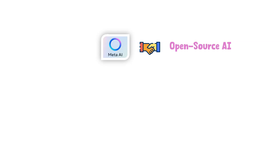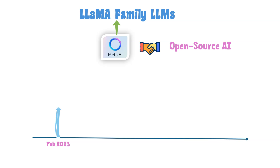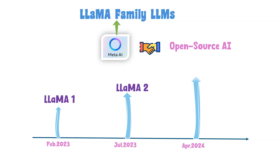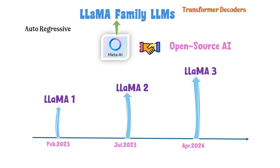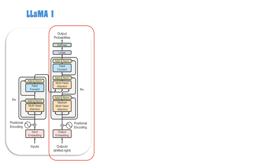Meta AI, with a strong commitment to open-source AI, introduced Llama 3 LLMs. Llama 3 LLMs are autoregressive language models based on transformer decoders. Llama 1, introduced in February 2023, is also based on transformer decoders. Llama 2 is developed based on Llama 1 with some key improvements.